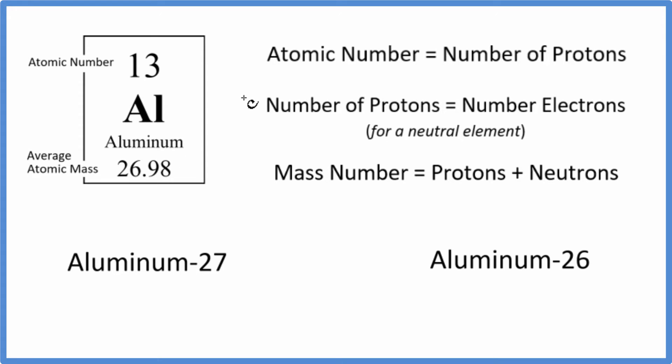Here's aluminum on the periodic table, and we have what's called hyphen notation here. We have a hyphen and then this number. So aluminum 27, that 27 is the mass number, the number of protons and neutrons. We'll use this to write our isotope notation.